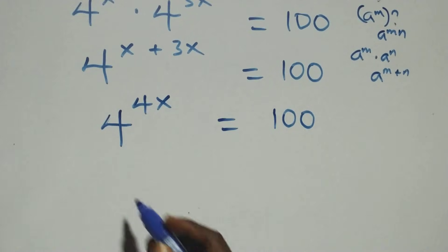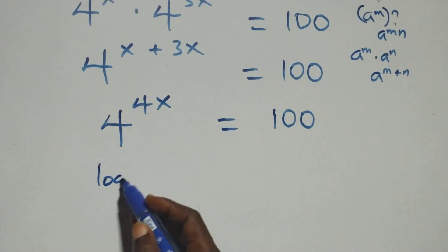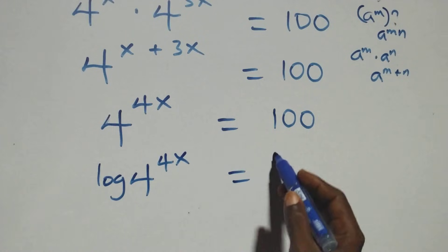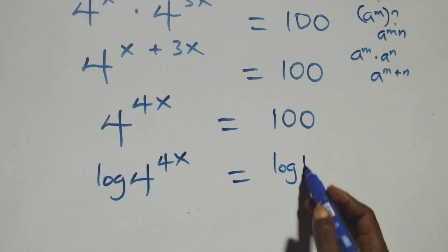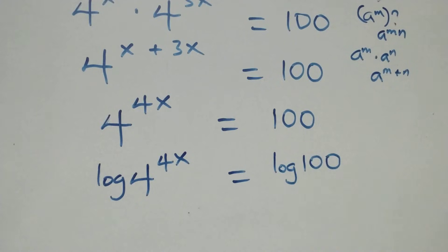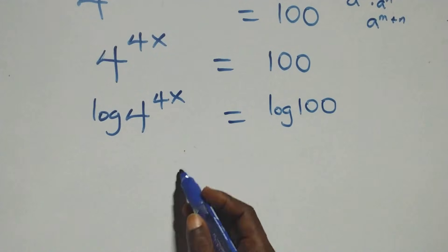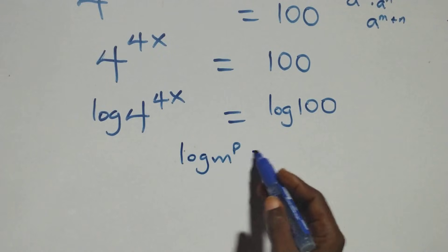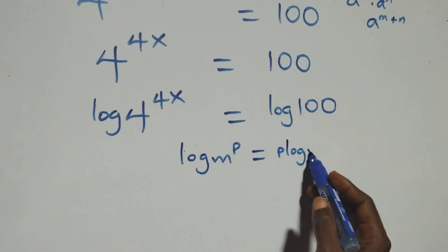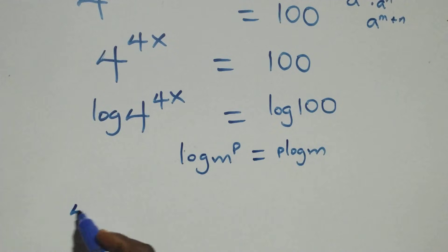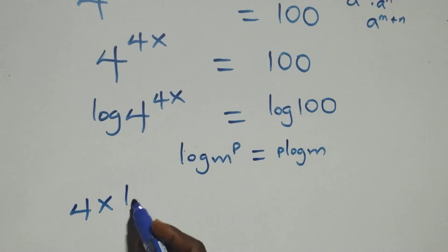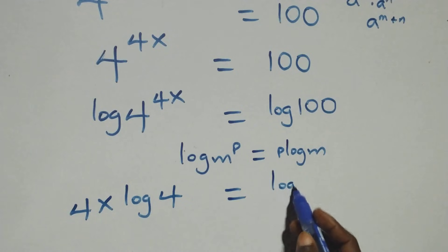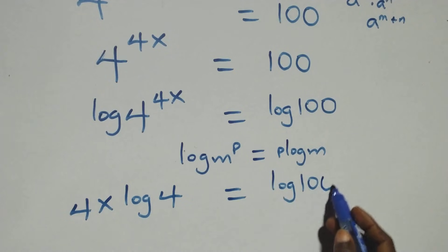Next step, we take the log on both sides. We have log of 4 raised to the power 4x equals to log 100. Then we apply the power rule of logarithm: log of m raised to power p is the same as p times log m. So this gives us 4x times log 4 equals to log 100.